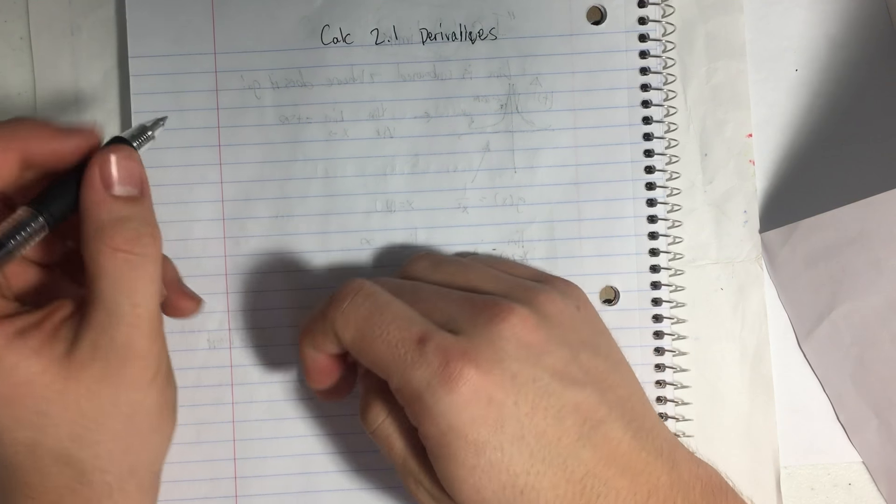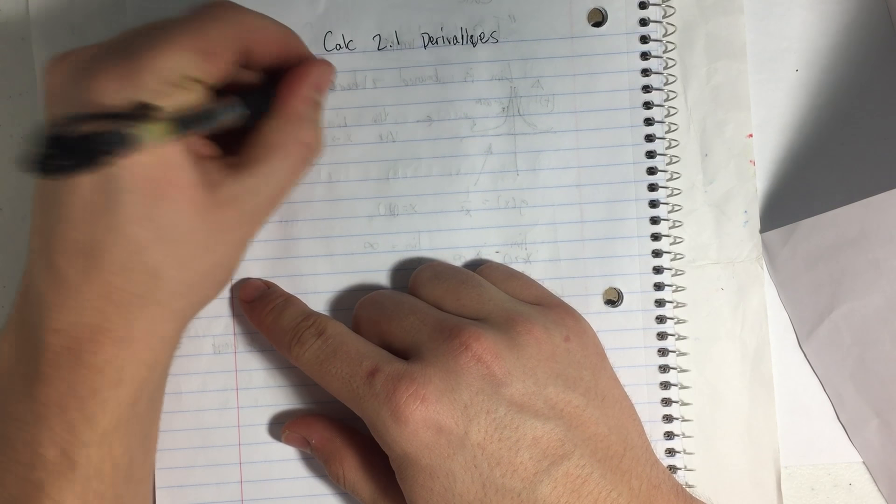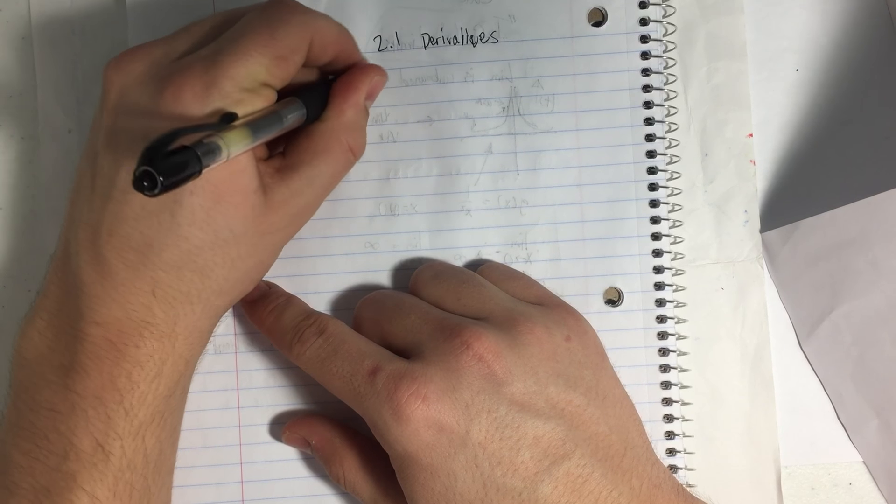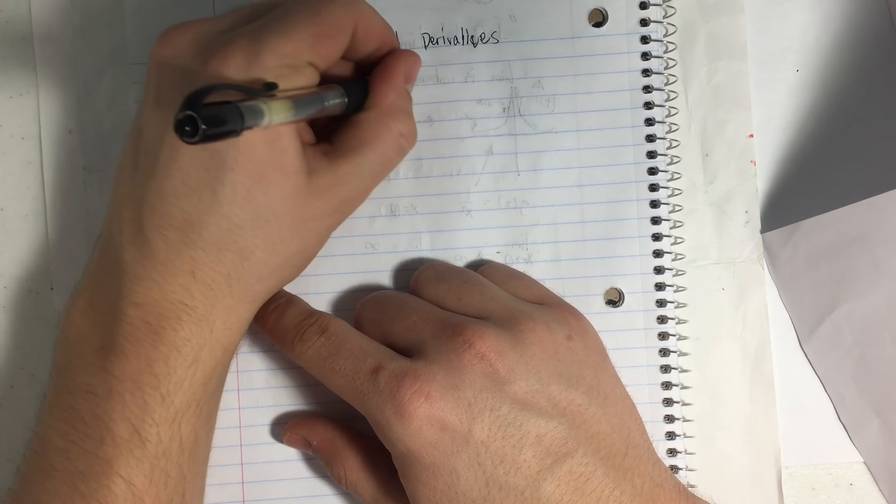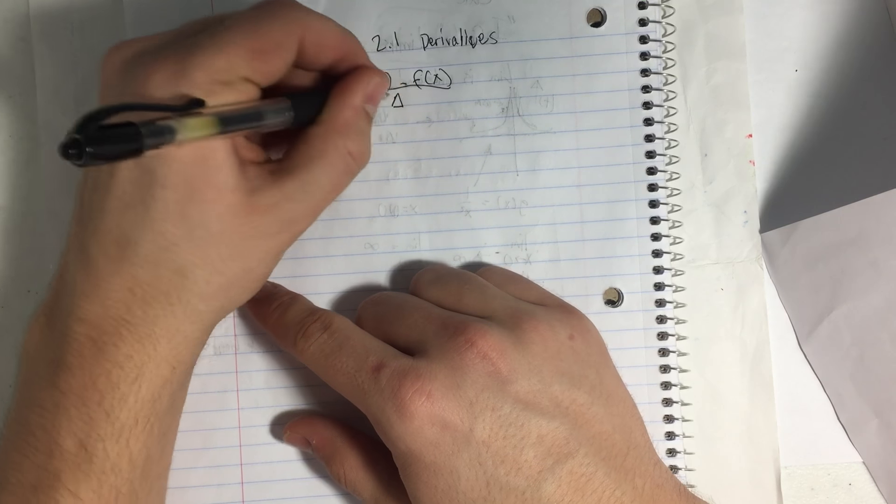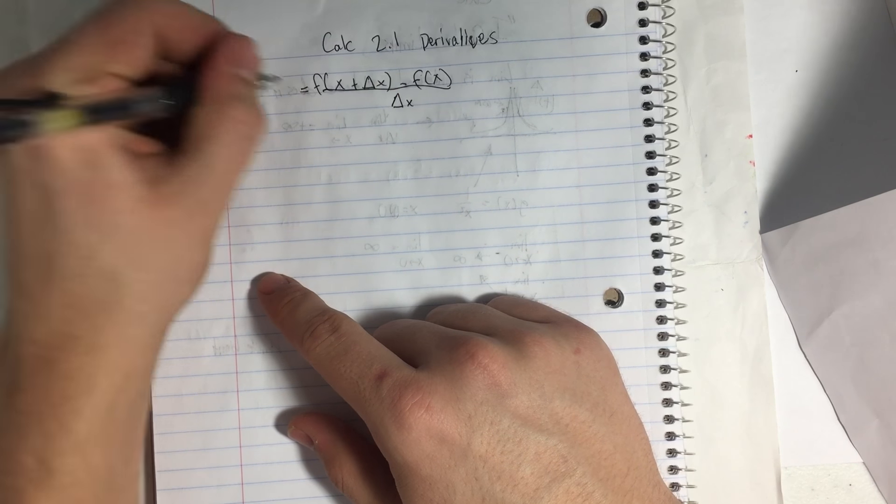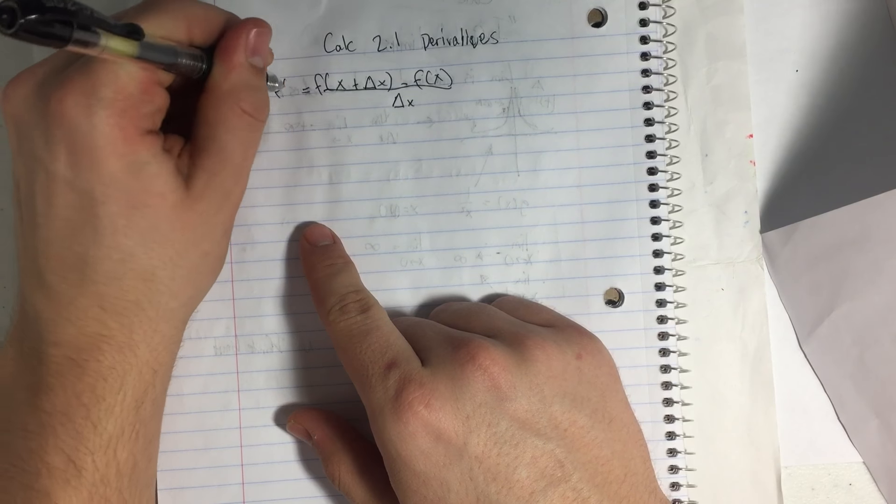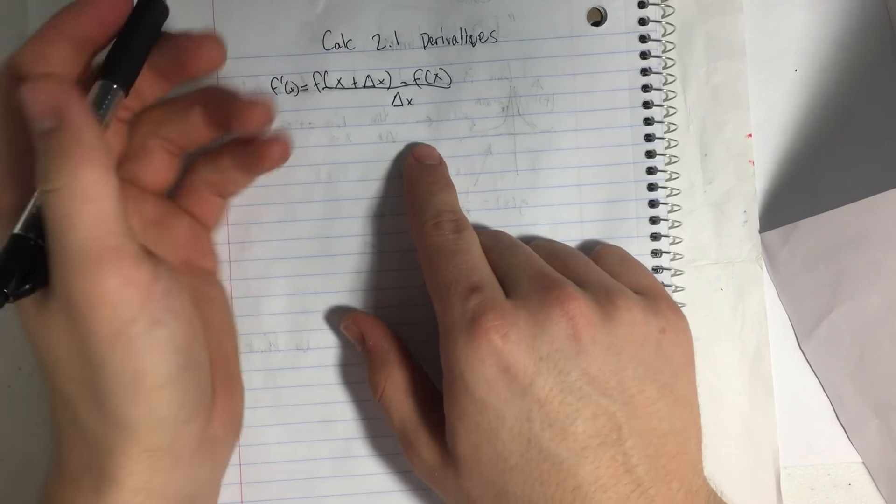So I'm going to go over one example of what the difference quotient means. So how do we solve a problem like that? Because this could look pretty scary to someone.